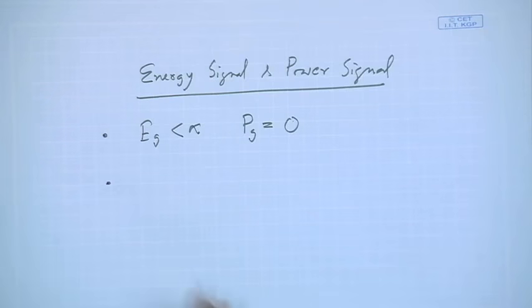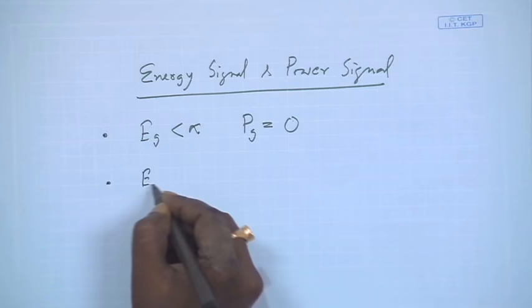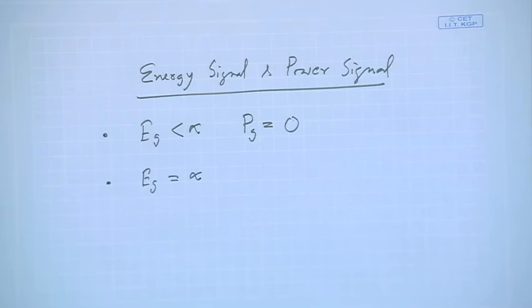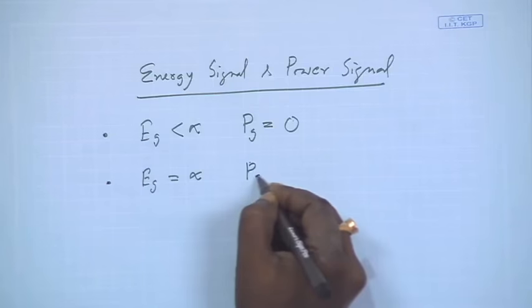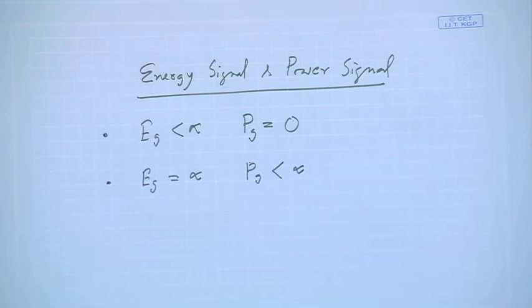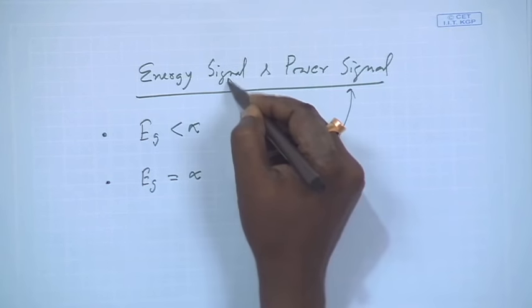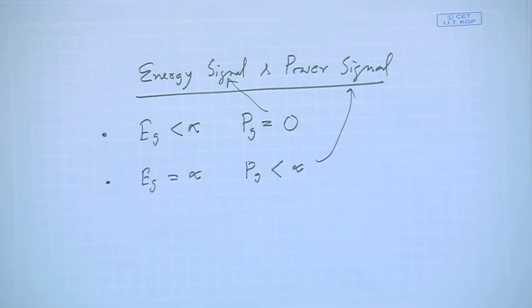A power signal is typified by periodic signals, where energy goes to infinity but power is finite. So the classification of energy signal versus power signal is closely related to whether the signal is time-truncated or periodic.